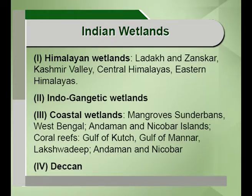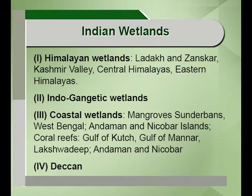In India, the wetlands can be characterized into five distinct types: mainly the Himalayan wetlands found in the Ladakh and Zanskar regions, the Kashmir valley wetlands, the central and eastern Himalayas where we find the Bhimtal and the Noh Kichral wetlands, the Indo-Gangetic and the Brahmaputra flood plains, and coastal wetlands such as the mangroves of the Sundarbans, the Gulf of Kutch, the Gulf of Mannar, Lakshadweep and the coral reefs of the Andaman and Nicobar. Some wetlands are also found in the Deccan plateau.